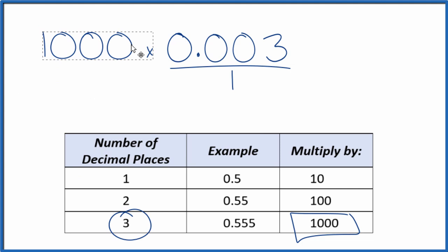When I multiply a thousand times 0.003, I end up with the whole number 3. So we have our whole number, but I can't just multiply the numerator here by a thousand.